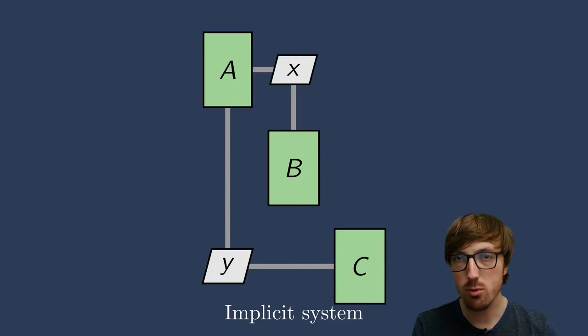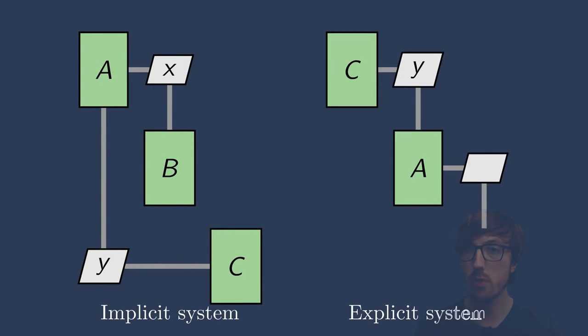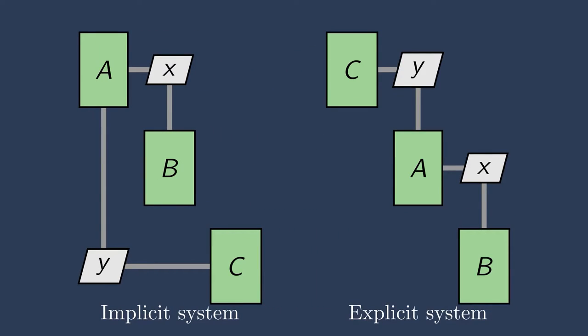Now, although this looks like an implicit system, we can rearrange the order of these components or subsystems to obtain an explicit system. If we simply move c to the beginning of the execution order, we could get c, a, b here, and it's all feed forward. So I simply want to bring this up because there are some times where you might have an implicit system that you can rearrange in order to get an explicit system.